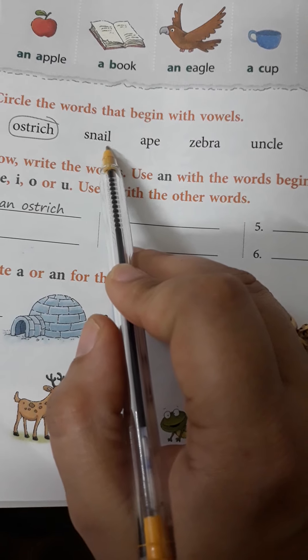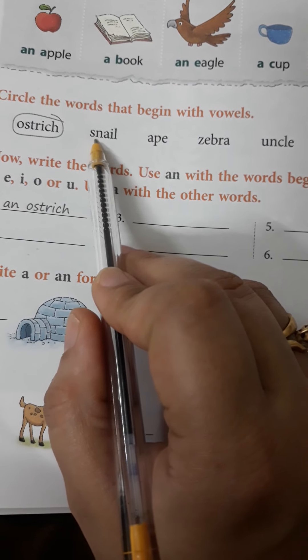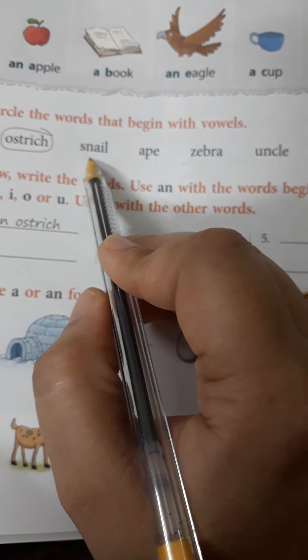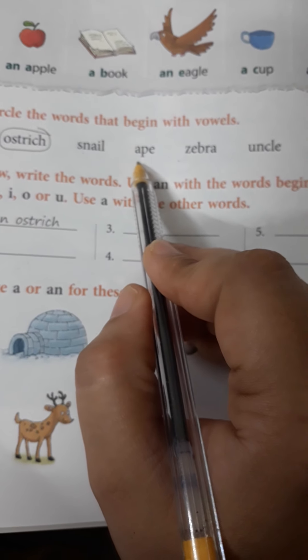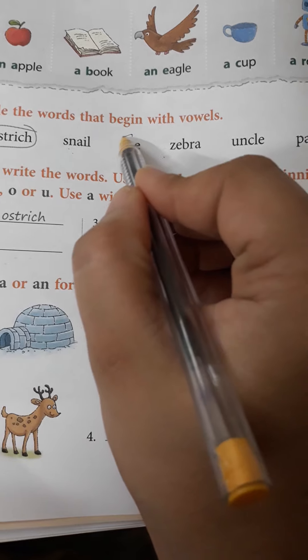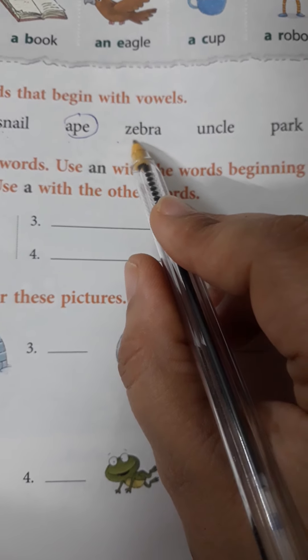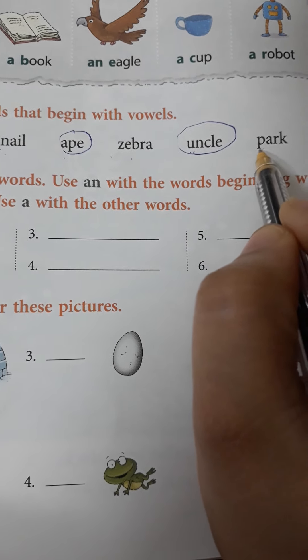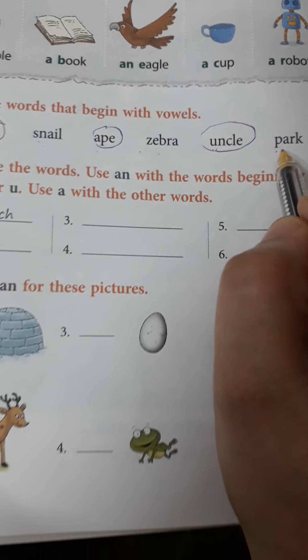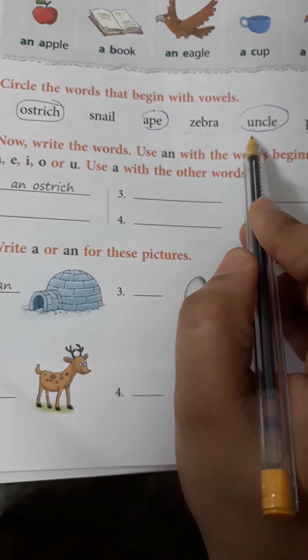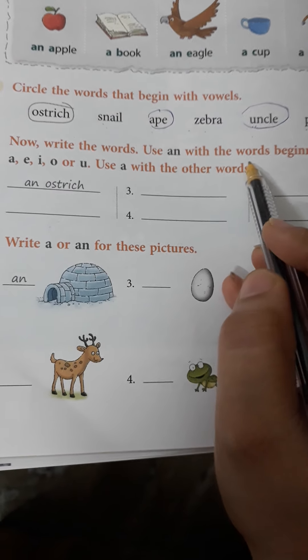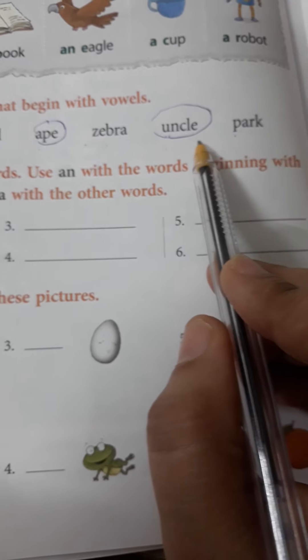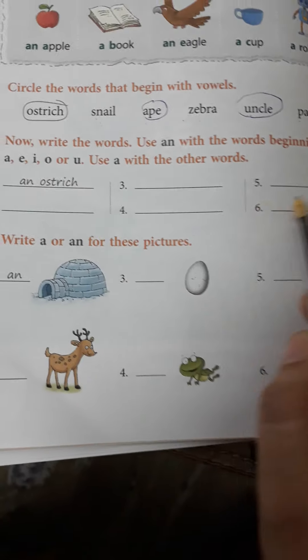Now, we have to see with which word we will write A or AN. For example, this is snail. It starts with S. Snail. First of all, you have to circle the words which starts with a vowel. S. It starts with a vowel. We will not circle it. Ape starts with a vowel. So, let's circle it. Zebra. Z is consonant. Uncle. U. U is vowel. So, let's circle it. Park. P is a vowel. No. So, we will not circle it. Now, the words which we have circled, we will write AN with them and with other words, we will only write A. Like, an ostrich, a snail, an ape, a zebra, an uncle, a park. You can write all these words over here. Okay.